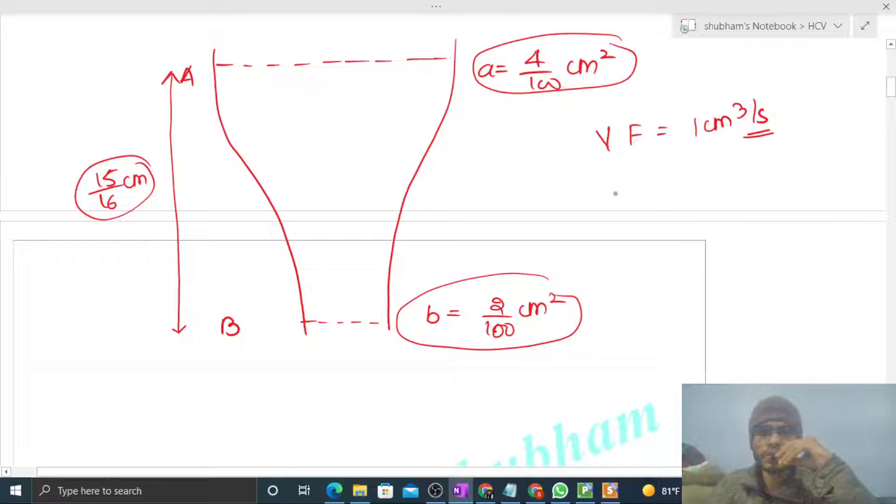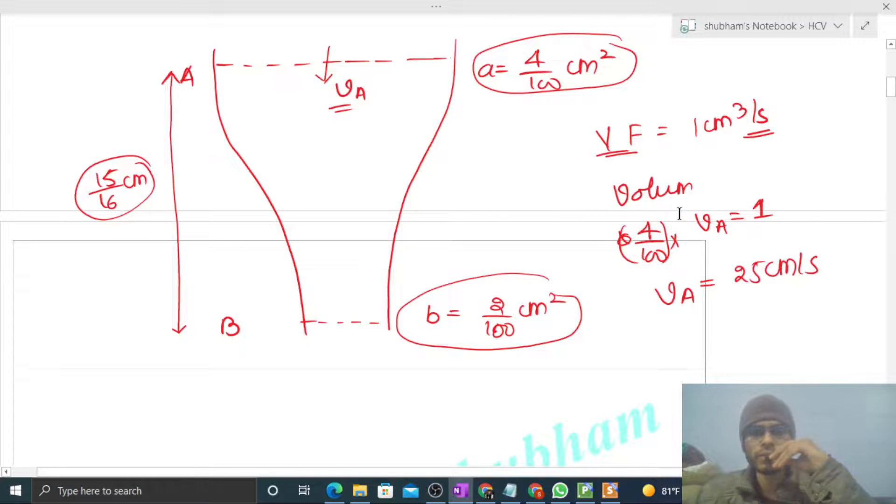Now we have to find out the speed of water at point A. Volume flux is nothing but cross-sectional area into speed. So at point A, the cross-sectional area, that is 4/100, into the speed of water, that is vA, that should be equal to volume flux which is 1 centimeter cubed per second. So you can say speed at point A will be 25 centimeter per second.